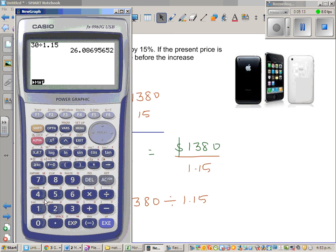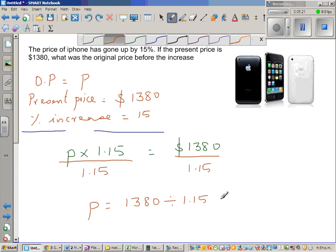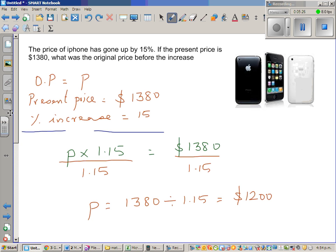Let us do that - 1,380 divided by 1.15, which is $1,200. So it's always good to make sense and see whether the answer makes sense. So the original price we are saying is $1,200. You can do this: 10% of that is $120. So 5% is half of this, which is $60. So 15% is $180.